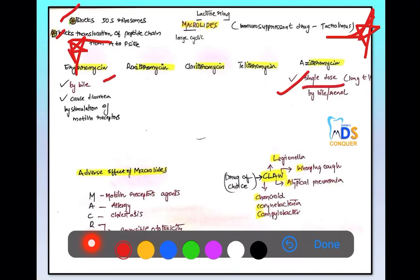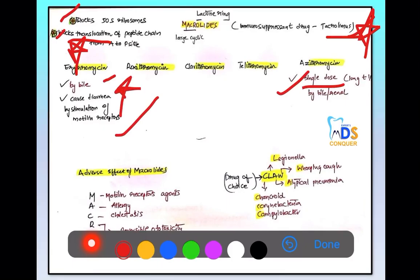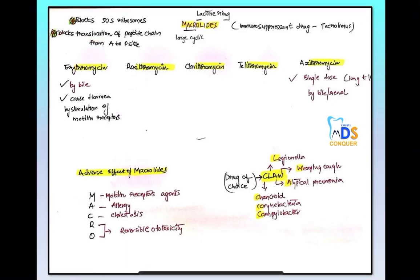Macrolides act as motilin receptor agonists, stimulating motilin receptors, which is why they can cause diarrhea. The adverse effects of macrolides can be remembered as MACRO: Motilin receptor agonist, Allergy, Cholestasis, and Reversible ototoxicity.